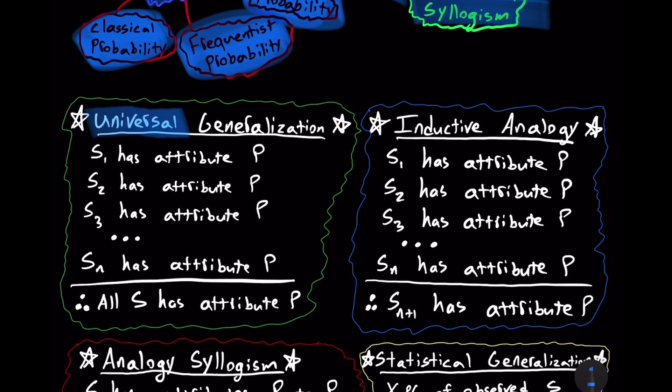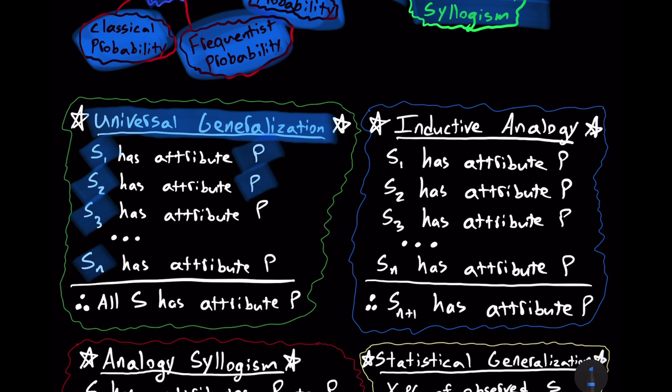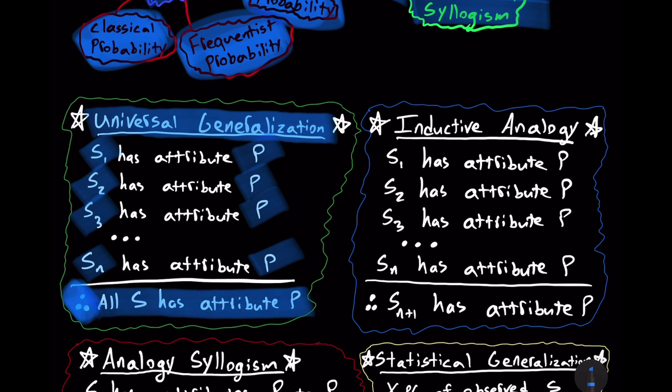And the most important place to start is universal generalization, and contrast that with inductive analogy, which is not the same thing. Now, universal generalization makes an inference to the effect that all members of a perceived group have a particular attribute. We have the group S. And each of those members, the first member, the second member, the third member, all the way to the nth member, have attribute P. And so we make a conclusion that therefore, all S has attribute P. Is that a good argument?